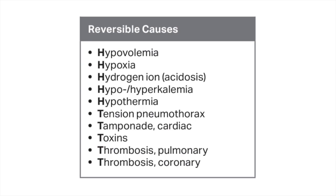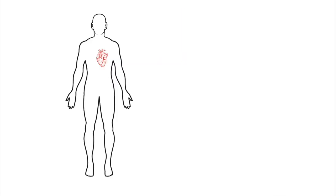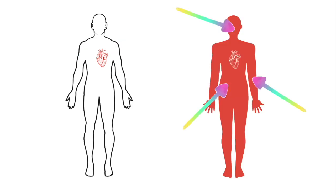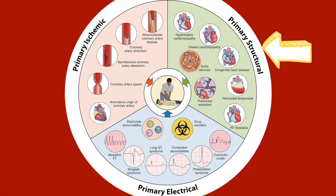So with this apparently comprehensive list, why would we add in a bunch of C's? Let's consider an important concept: causes of cardiac arrest can be cardiac or non-cardiac. When we consider the cardiac causes, the AHA has a nice way of categorizing them — primary ischemic, primary structural, and primary electrical.